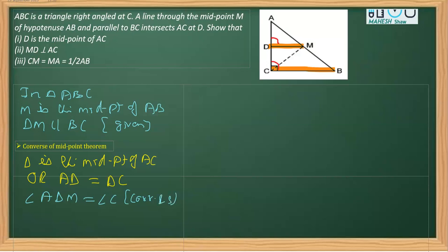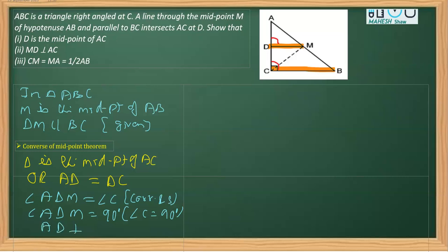Since angle C is 90 degrees, we can replace angle C with 90 degrees, so angle ADM is equal to 90 degrees. Therefore DM is perpendicular to AC. That completes the second part of the proof.